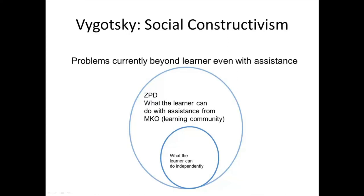Two principles predominate Vygotsky's learning theory: the more knowledgeable other (MKO) and the zone of proximal development (ZPD). A more knowledgeable other is a guide who can facilitate the learning of another — someone or something who has a better understanding of the concept than the learner does themselves. The MKO can assist the learner to solve a problem that was impossible to learn independently. This is the primary characteristic of the ZPD, defined as the difference or zone between what a learner can achieve independently and what a learner can achieve with the guidance and facilitation of an MKO. The concepts of MKO and ZPD take on particular importance for educators as they provide guidance regarding what can be done to facilitate learning.